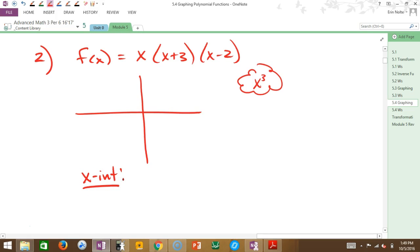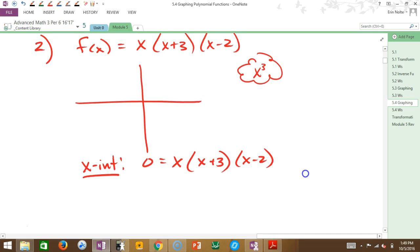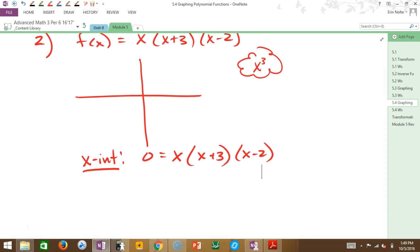Let's find our x-intercepts. We just said that to find the x-intercept, we take the function, we set it equal to 0, right? So I have 0 is equal to x times x plus 3 times x minus 2. Okay, so how many zeros do I have? Three. I get x equaling 0, I get 1 from x plus 3, negative 3, and if I have x minus 2 equaling 0, I have a third one at positive 2.